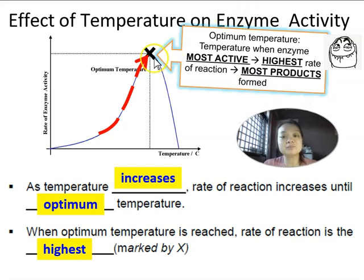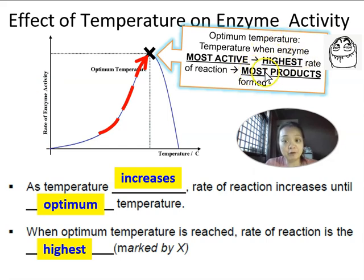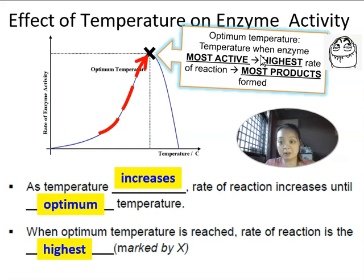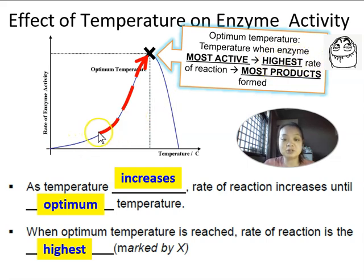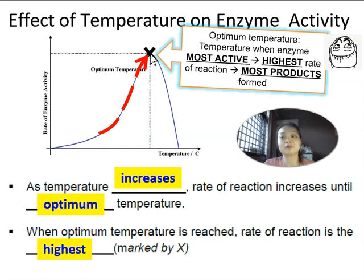The optimum temperature is the temperature where the enzymes are the most active — that means the rate of reaction or the enzyme activity is the highest, and therefore the most products are formed. Please take this down in your notes. In the N level exam, they can ask you a one-mark question: define what is optimum temperature. You must say: optimum temperature is the temperature where the enzyme is the most active, so the rate of reaction is the highest and the most products are formed.